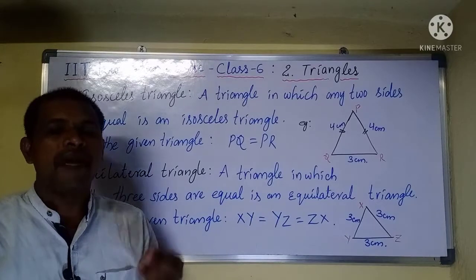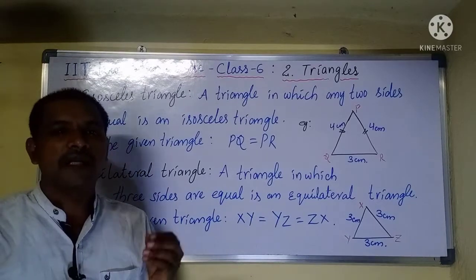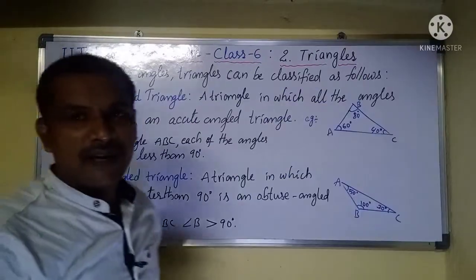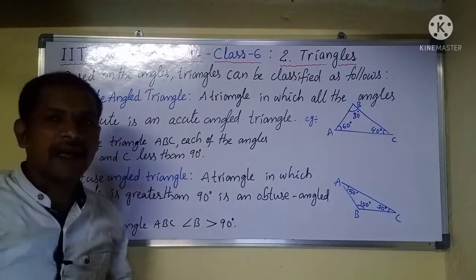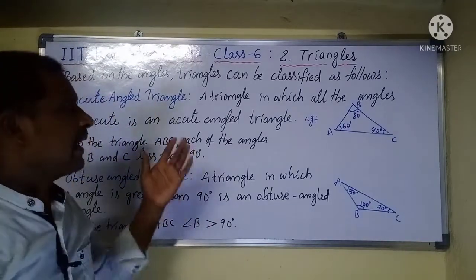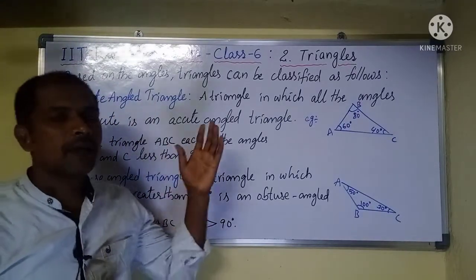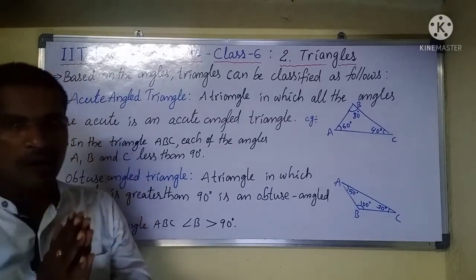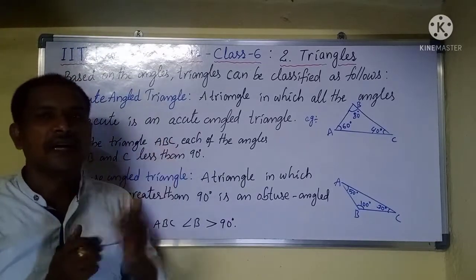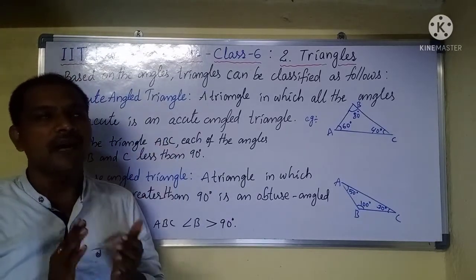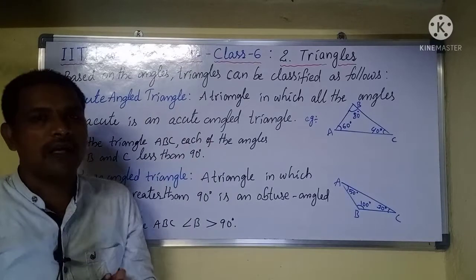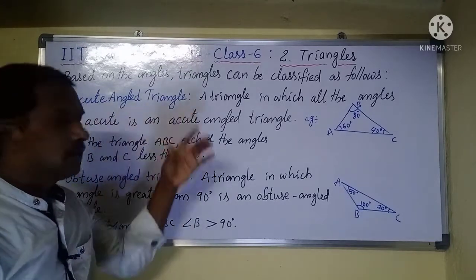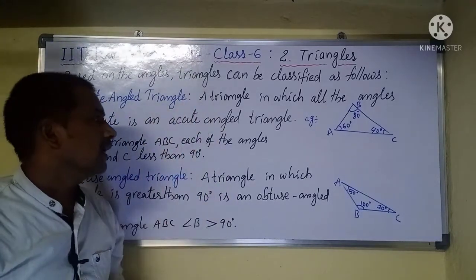Now let us discuss the types of triangles based on their angles. Triangles can be classified into four types based on their angles. The first one is an acute angle triangle.